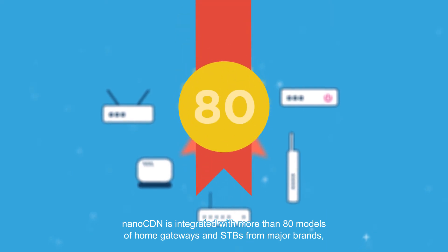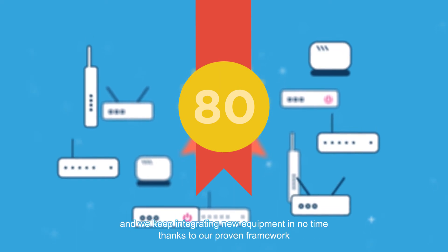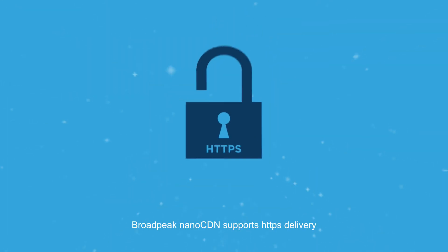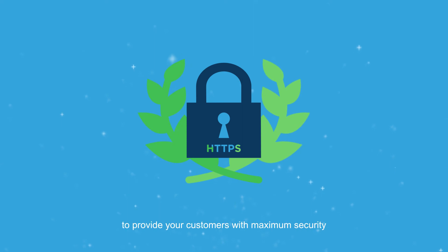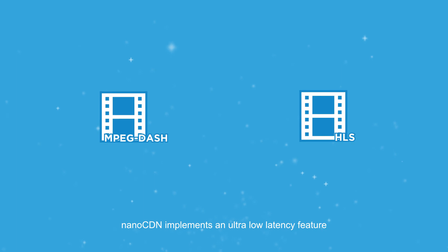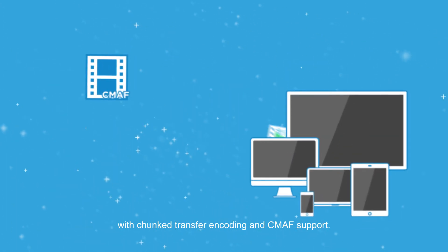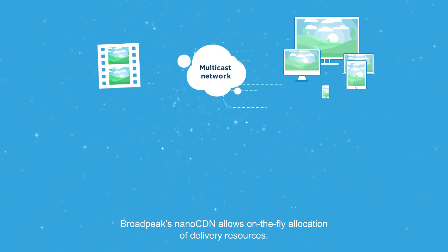Broad Peak's nano CDN offers unique features for your multicast ABR solution. Nano CDN is integrated with more than 80 models of home gateways and STBs from major brands, and new equipment is continuously added thanks to a proven framework. Broad Peak nano CDN supports HTTPS delivery to provide customers with maximum security.